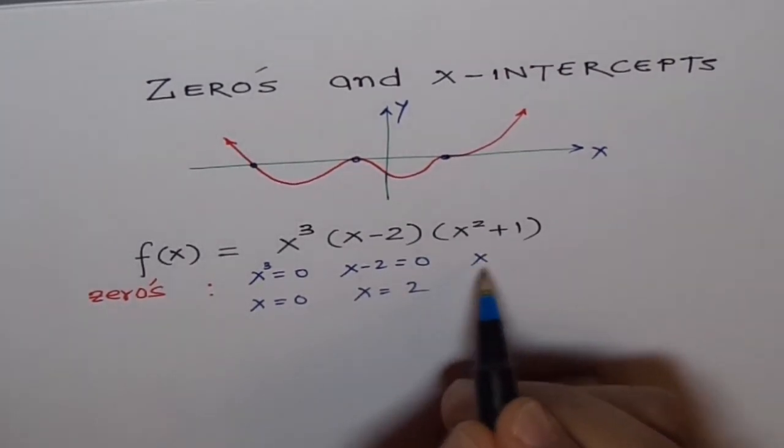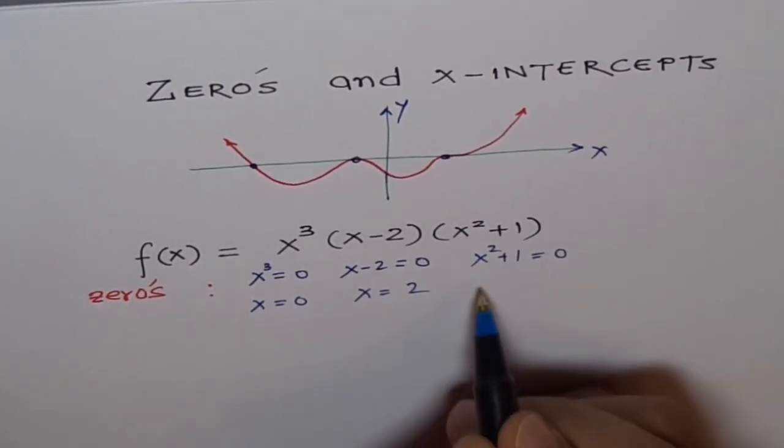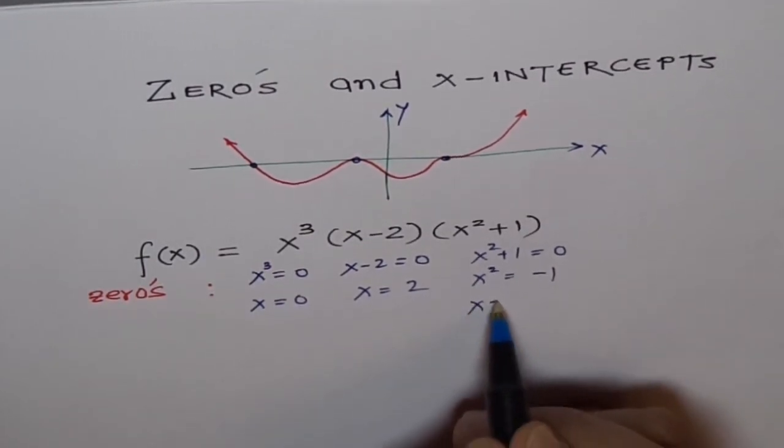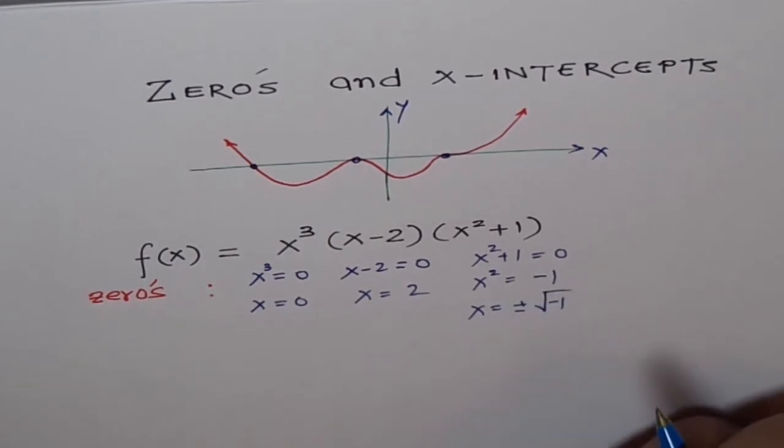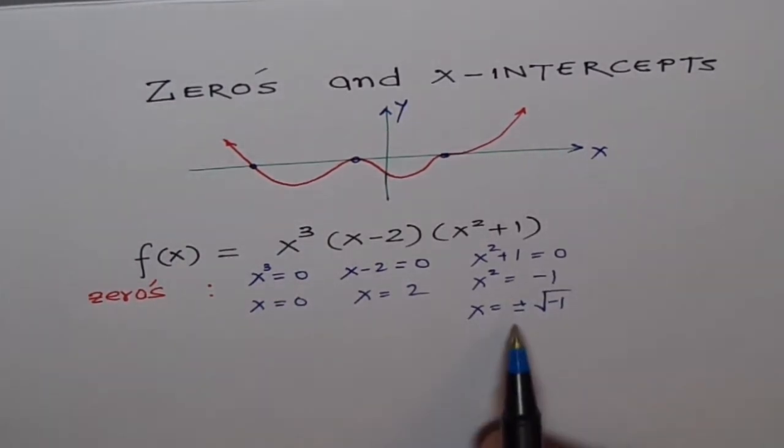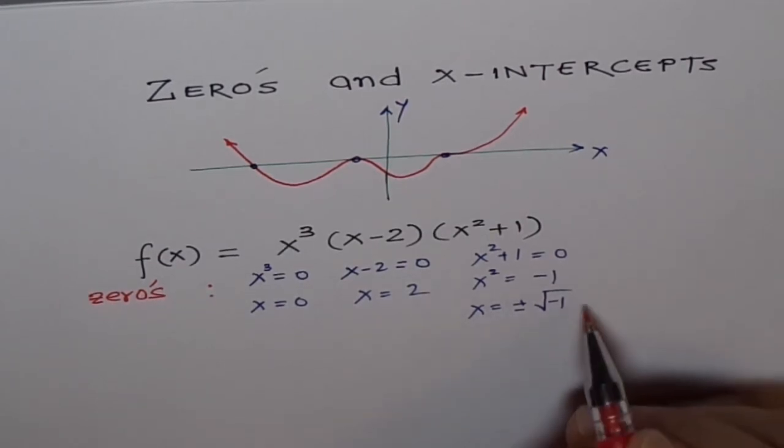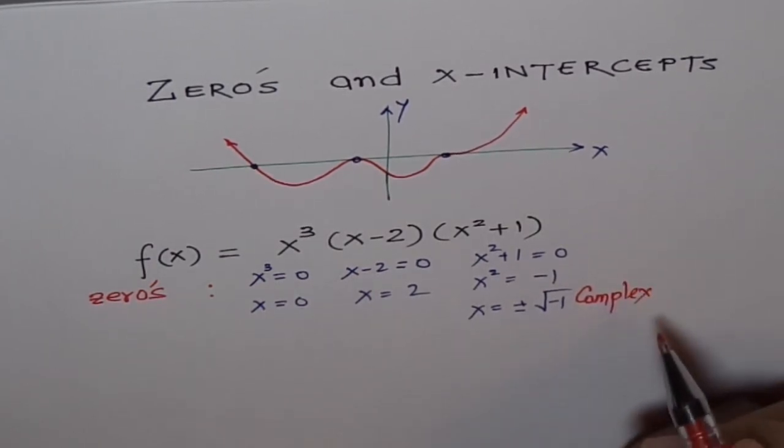And how about this? X²+1 equals zero, that means X² equals -1, or X equals plus minus square root of -1. Good. Now this plus minus square root of -1 doesn't belong to real numbers. Correct. What is this? This is a complex number, not real.